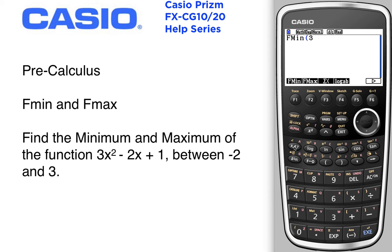Let's type in our function 3x squared minus 2x plus 1. We want to look for a minimum between negative 2 and 3.